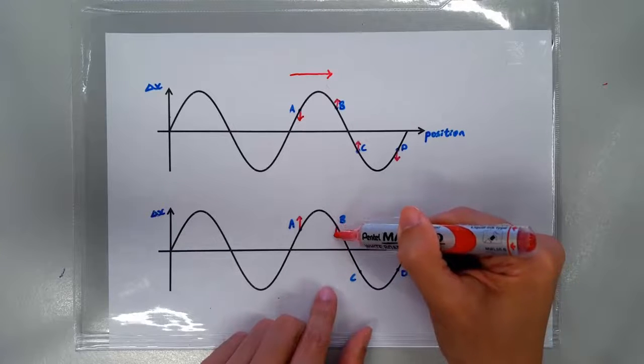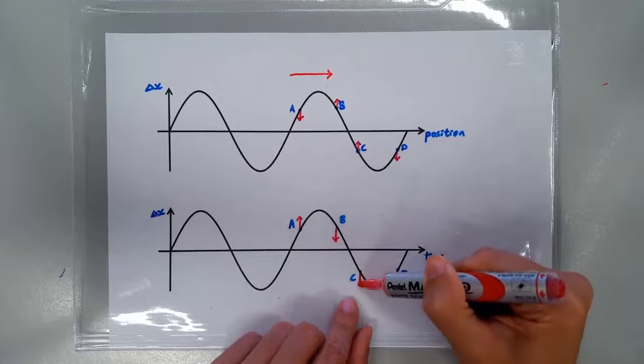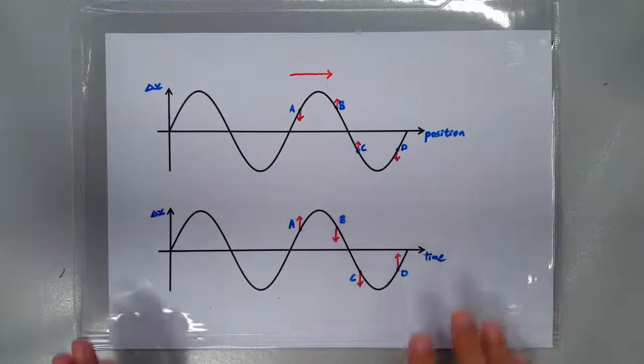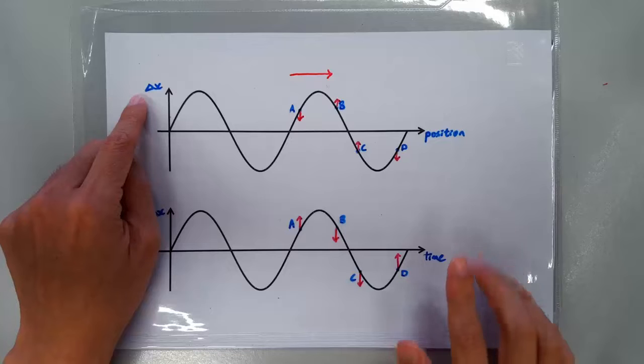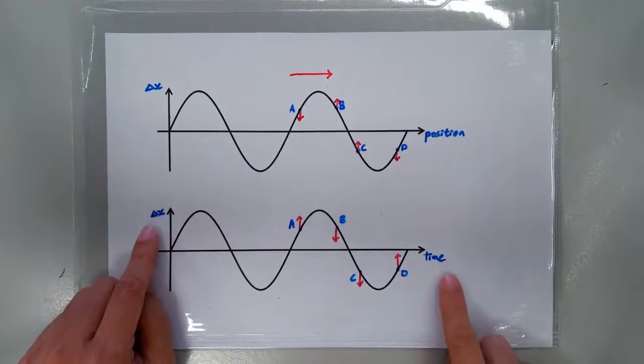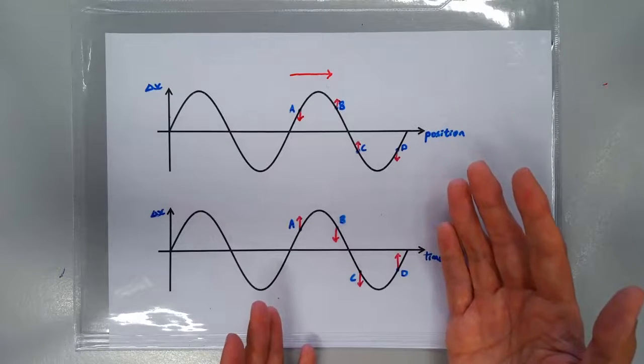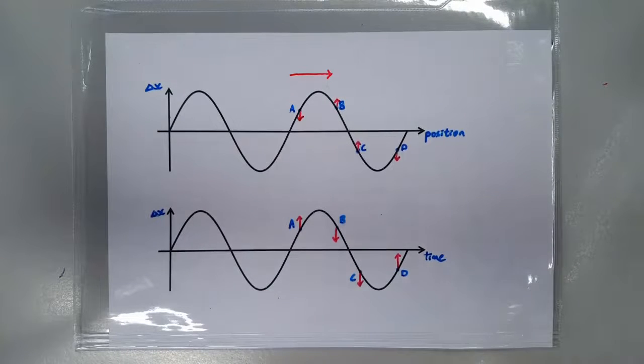So similarly, this guy here is actually on the way down, this guy is on the way down, and this guy is on the way up. So make sure you check whether what you're looking at is a displacement position graph, or a displacement time graph, because the conclusions are exactly opposite. Alright, that's all. Ta-ta!